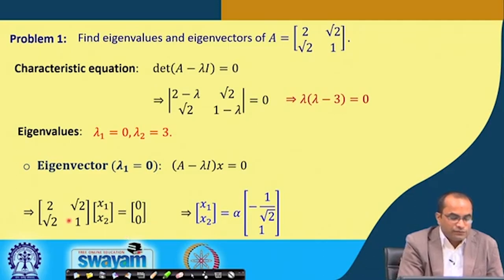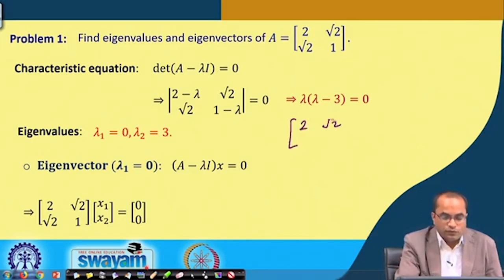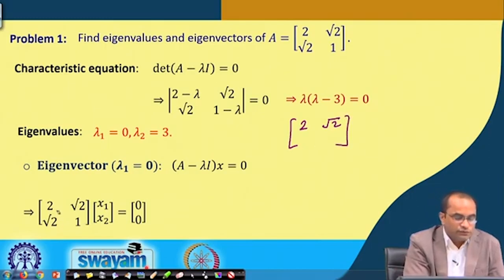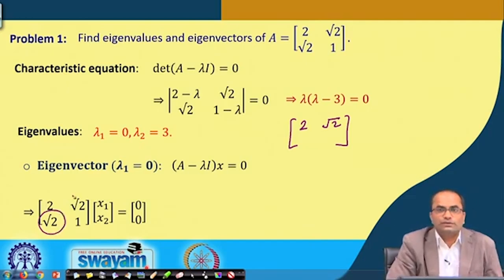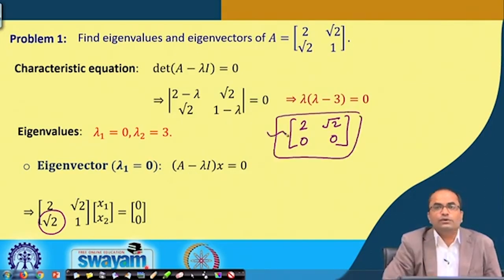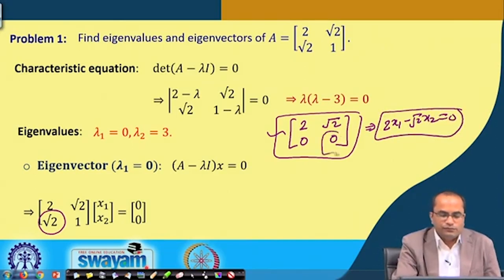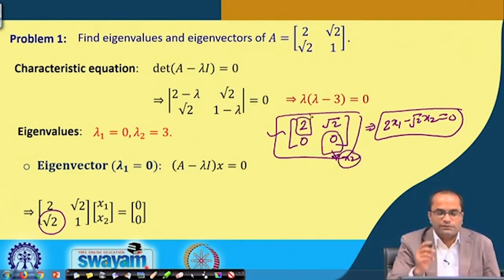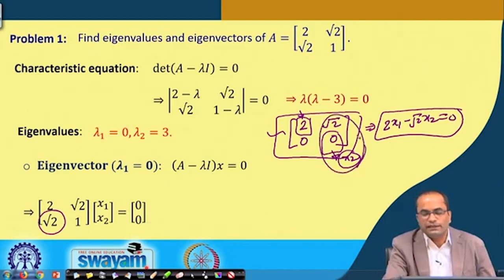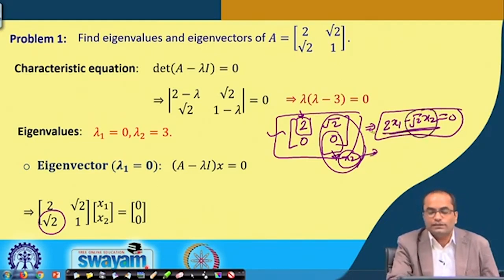Here the matrix A is [2, √2; √2, 1] and we need to solve [2, √2; √2, 1][x₁; x₂] = 0. The first row is 2 and √2, the second is √2 and 1. To make the second row zero, we can divide the first row by √2, giving [√2, 1] for the first row, and the second row becomes zero as well. This is the row-reduced echelon form.